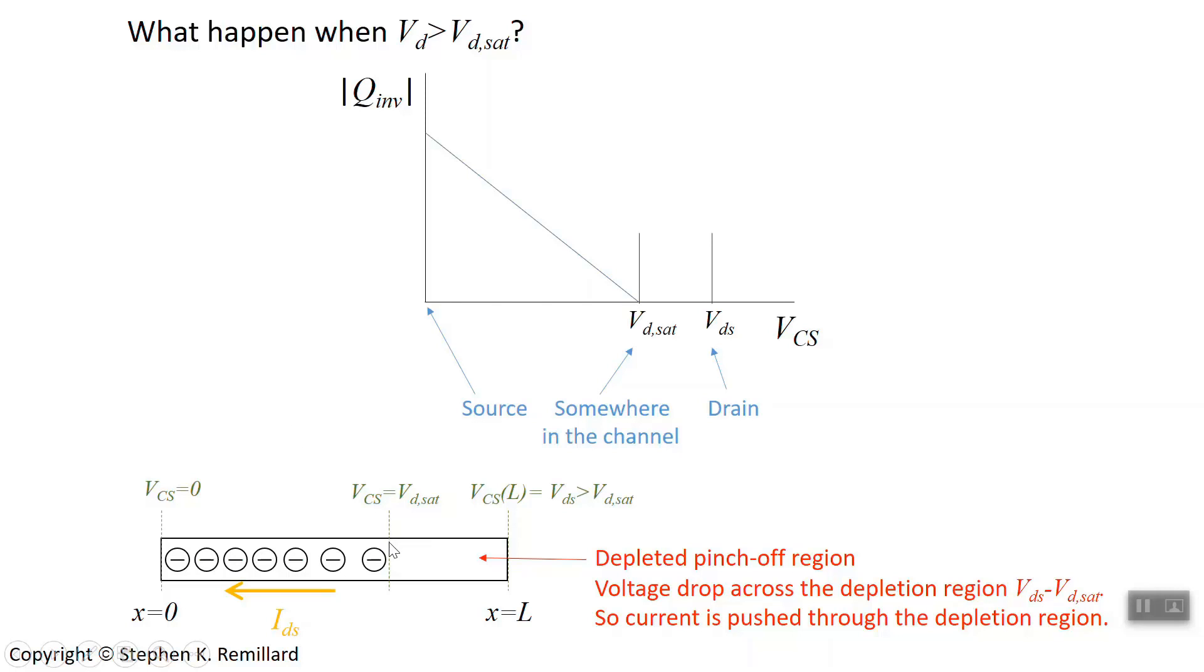Some point in the channel has its potential go all the way up to the saturation potential, and you have a depletion region from there all the way to the drain. And that's your pinch-off region.